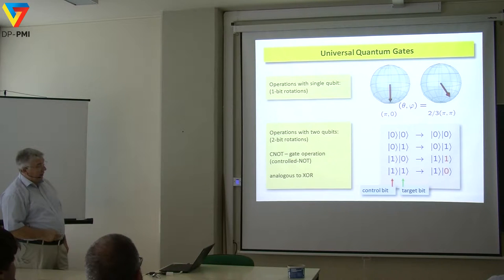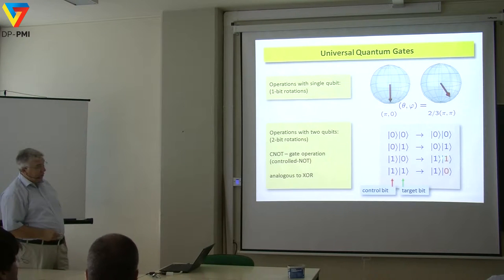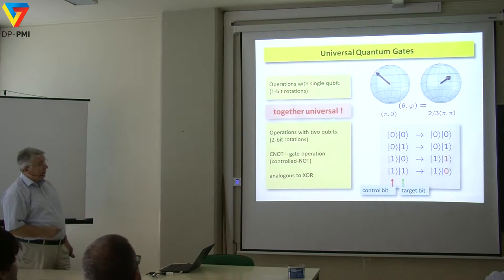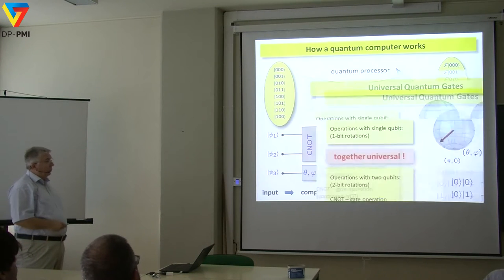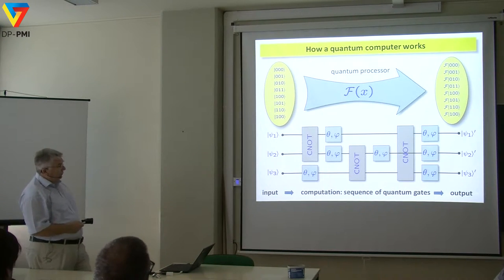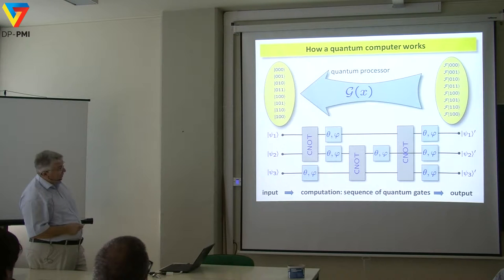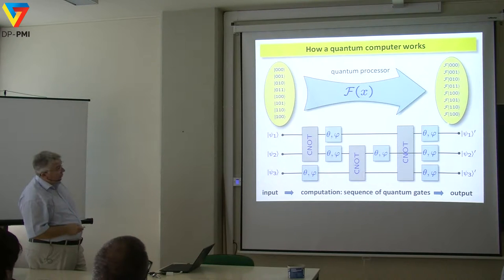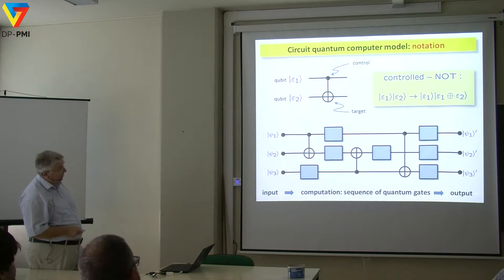Whenever a controlling amplitude is set, we want the target amplitude to be flipped — but that has to hold in a superposition manner. Together, these are already a set of universal operations, and that's the most important point. We then have a blueprint: a sequence of single and two-qubit CNOT-type operations, and then we finally measure things, which is completely irreversible, giving us the classical outcome.